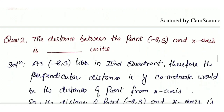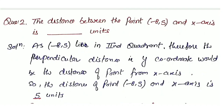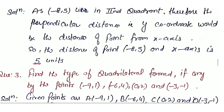Question 2: The distance between the point (−8, 5) and the x-axis is how many units? The point (−8, 5) lies in the second quadrant (x negative, y positive). The perpendicular distance from a point to the x-axis is simply the y-coordinate. So the distance of point (−8, 5) from the x-axis is 5 units.